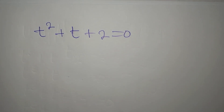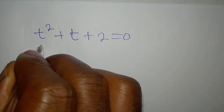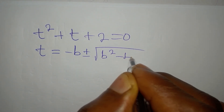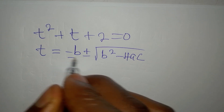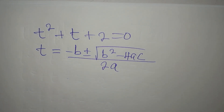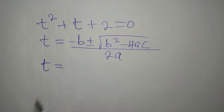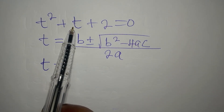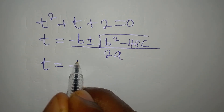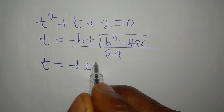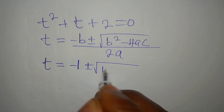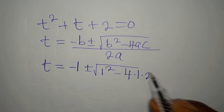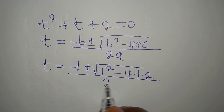Now let's solve t squared plus t plus 2 equals 0 using the quadratic formula: t equals minus b plus or minus the square root of b squared minus 4ac, all divided by 2a. Our b is 1 (the coefficient of t), so we have minus 1 plus or minus the square root of 1 squared minus 4 times 1 times 2, all divided by 2 times 1.